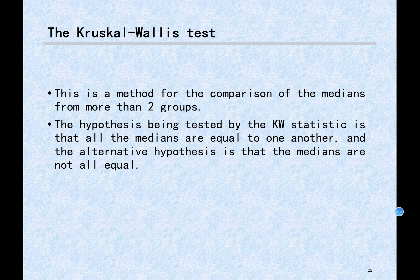These two rank sum methods cover one-sample, paired, or two-independent-sample tests. But if we encounter more than two groups, we need a new method called the Kruskal-Wallis test (KW test), which is used for comparison of more than two groups.